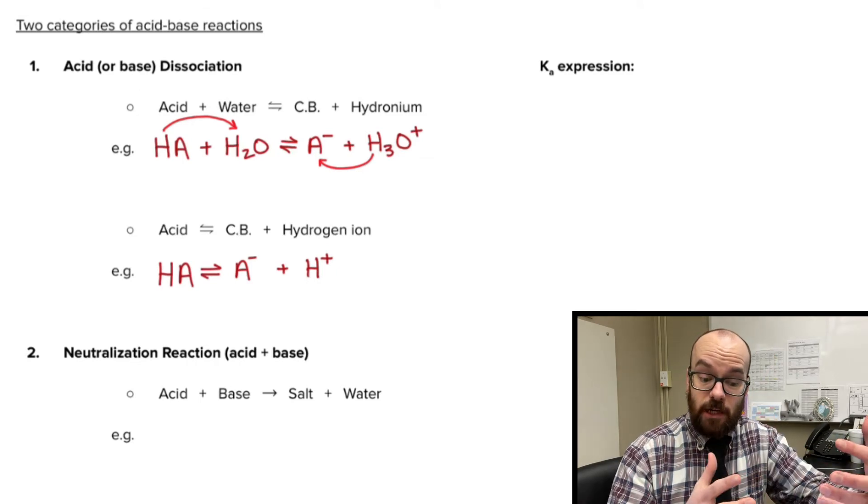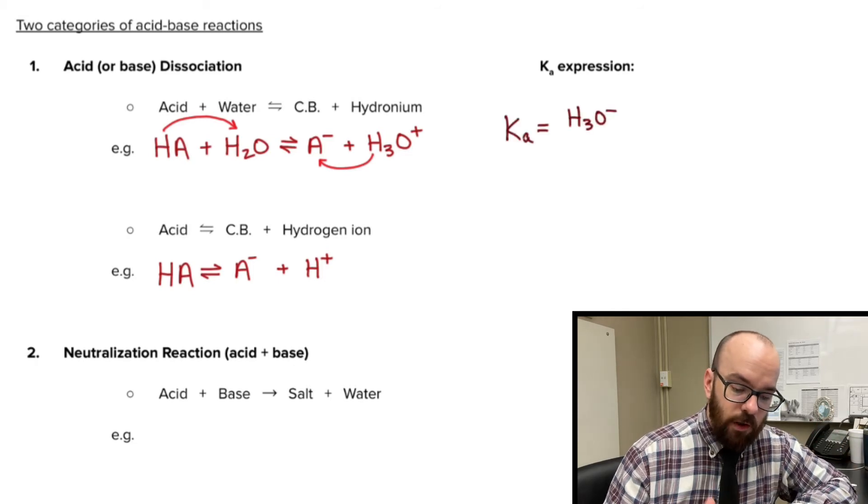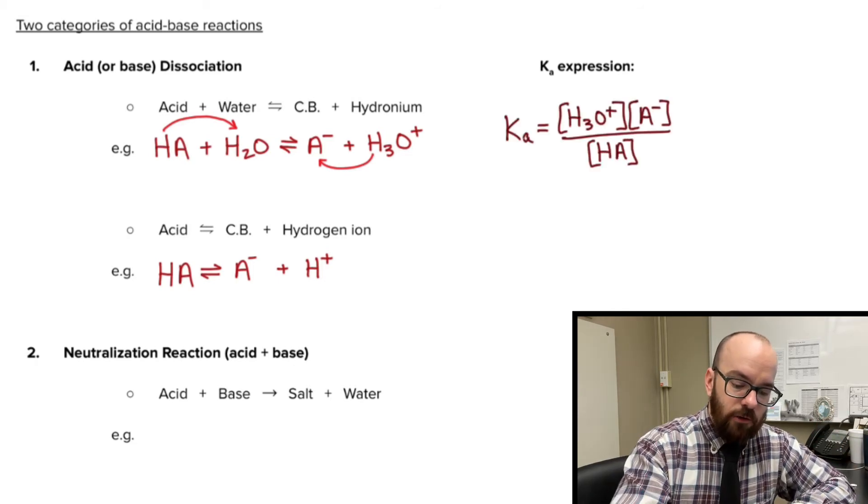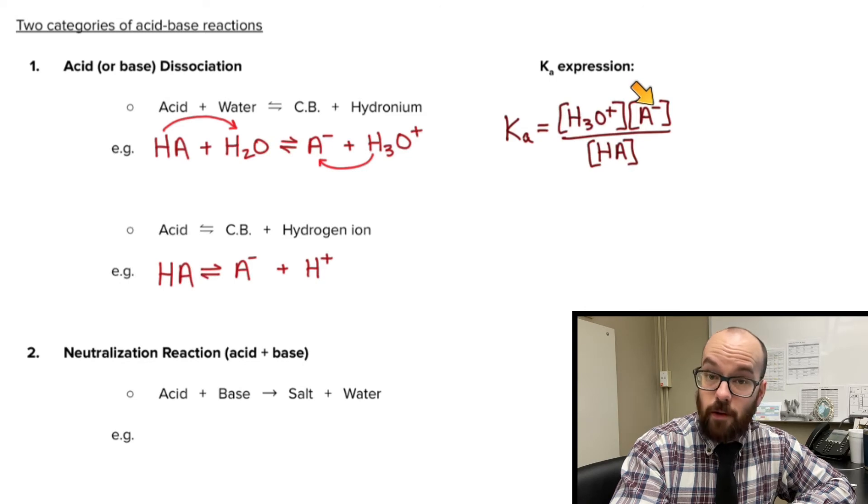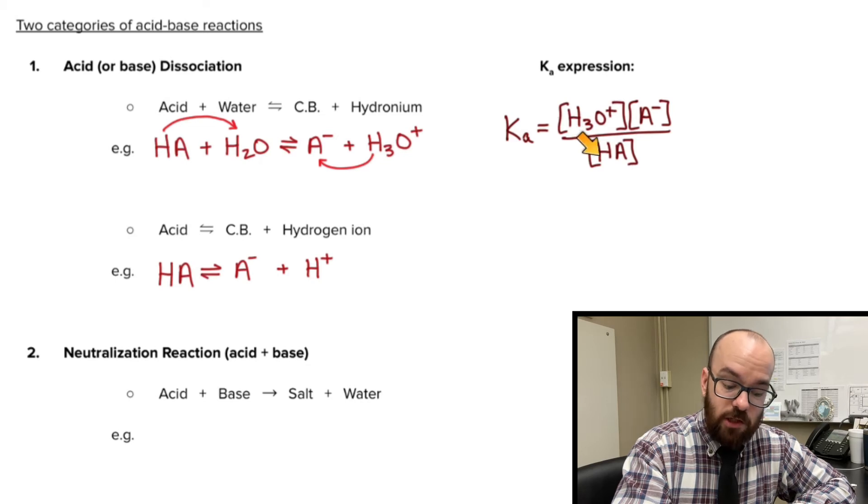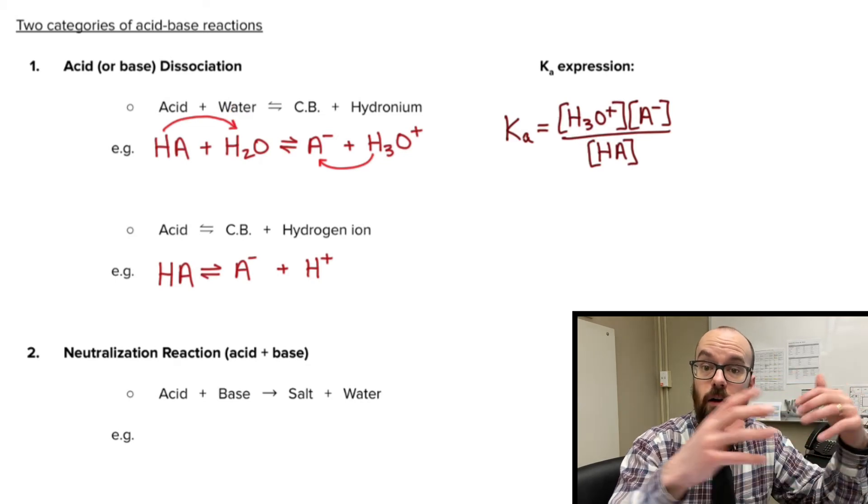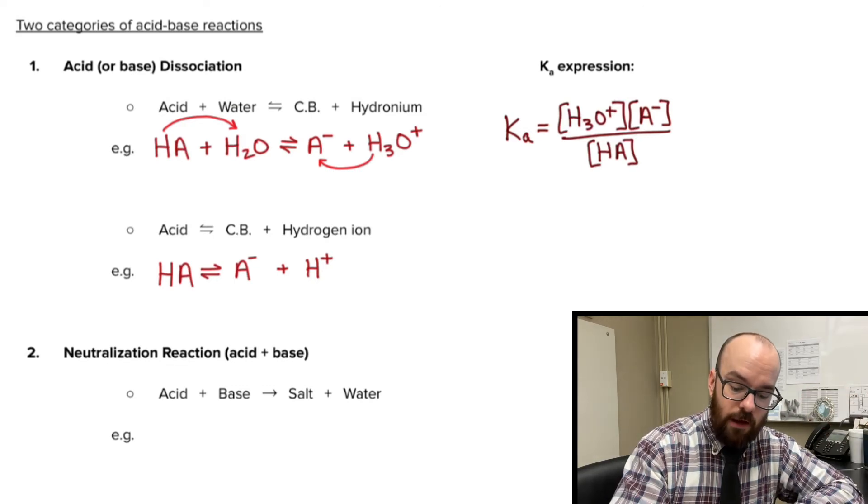Now, the Ka expressions for each actually end up being basically the same thing. Let's take a look. In the first one, our Ka will look like this. We have hydronium and the conjugate base, which is A- here. And we find those on our product side. And then for reactants, we just have HA because, remember, water is our solvent, and so we don't include that in our K expression. So we have hydronium times conjugate base over our initial acid form.